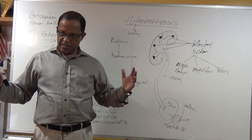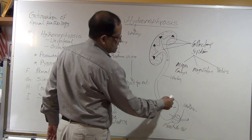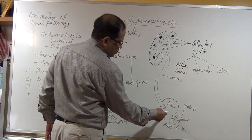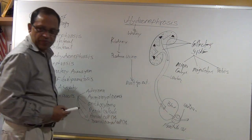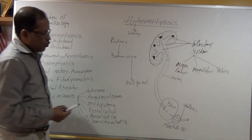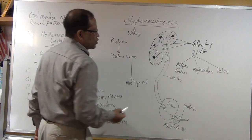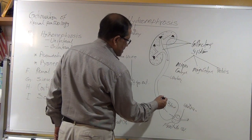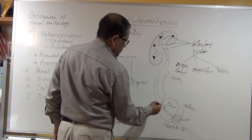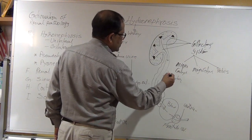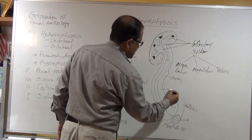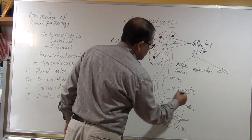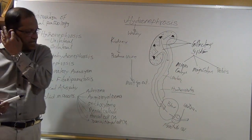Otherwise, the bladder will become super distended. If the bladder pressure becomes greater than the ureteric pressure, urine will reflux into the ureter — we call this hydroureter. When the ureter is dilated, we call it hydroureter.